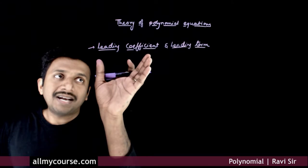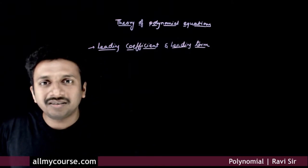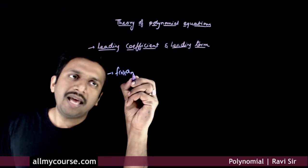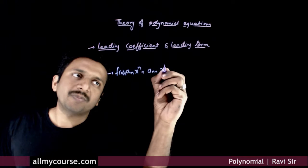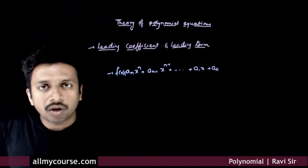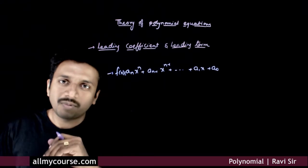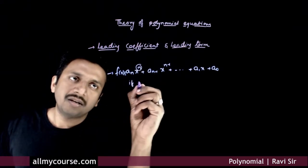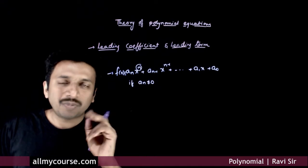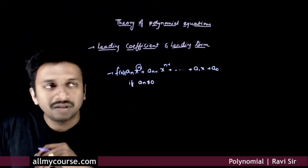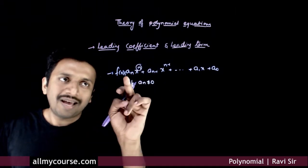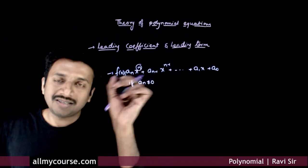The next terms you need to understand are the leading coefficient and the leading term. If you have a polynomial f(x) = a_n x^n + a_(n-1) x^(n-1) + ... + a_1 x + a_0, this is a polynomial in variable x of degree n if a_n ≠ 0. The degree of the polynomial is the highest power of x present in the polynomial whose coefficient is non-zero. So if a_n is non-zero, x^n will be the highest power of x present, hence this is a polynomial of degree n.